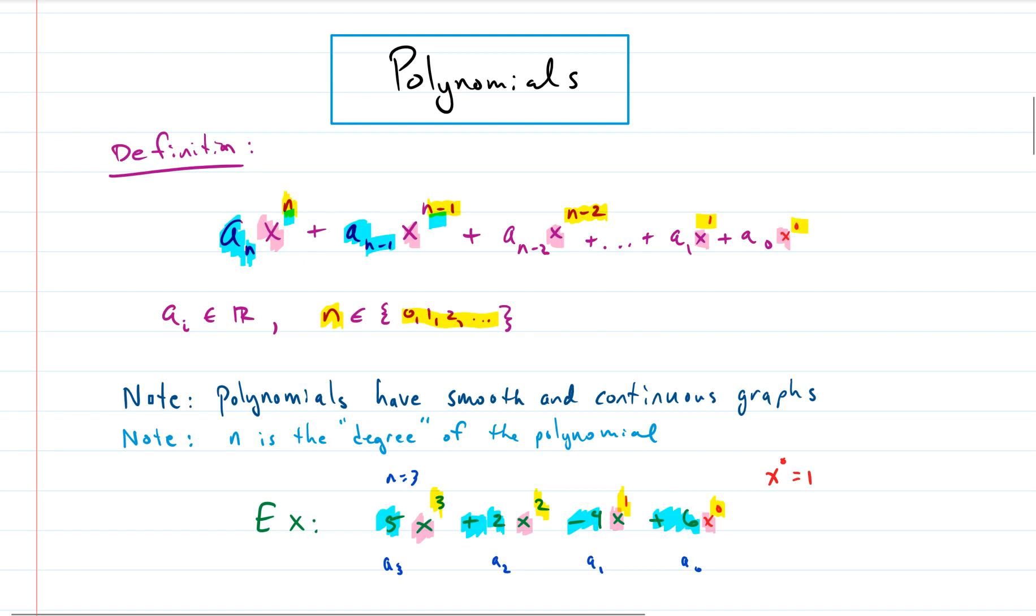These coefficients, the a's, can be any real number. That's it. Last comment, polynomials are smooth and continuous. They don't have any breaks or sharp edges. And the highest power, the n, is called the degree of the polynomial. So in our example, this polynomial is of degree three.